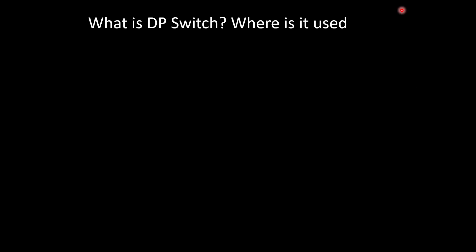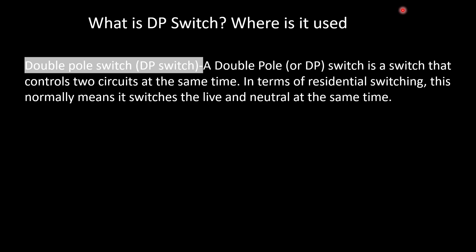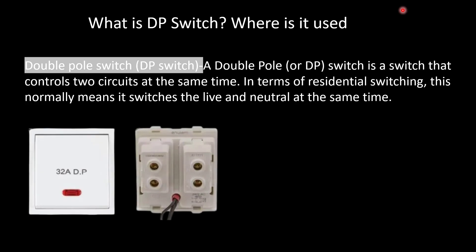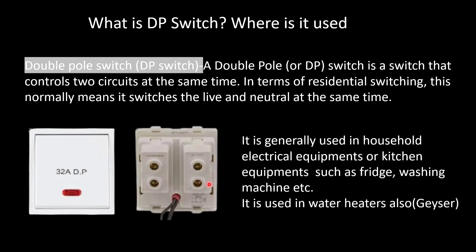What is a DP switch and where is it used? A Double Pole (DP) switch is a switch that controls two circuits at the same time. In terms of residential switching, it switches the live and neutral at the same time. In SP switches, only the phase comes through; in DP switches, both phase and neutral come through. The back side of a DP switch has four terminals, whereas an SP switch has two terminals. It is generally used in household electrical equipment such as fridges, washing machines, and water heaters.